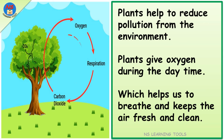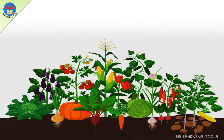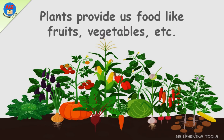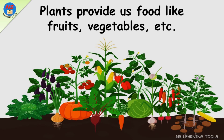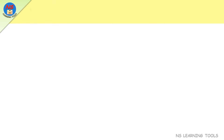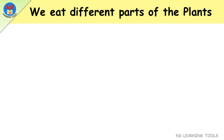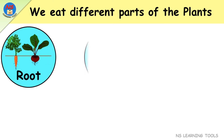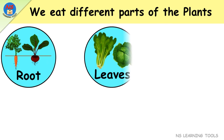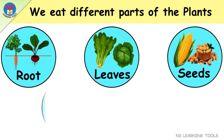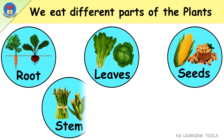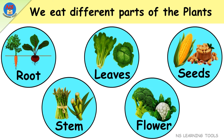Plants provide us food like fruits, vegetables, etc. We eat different parts of plants, like roots, leaves, seeds, stem, and flower.